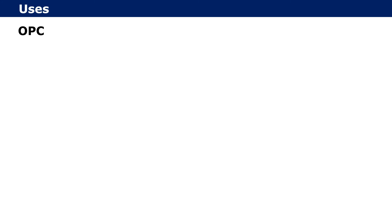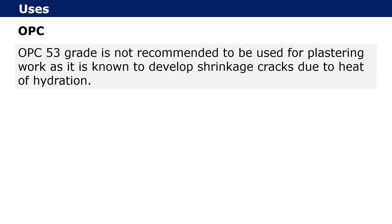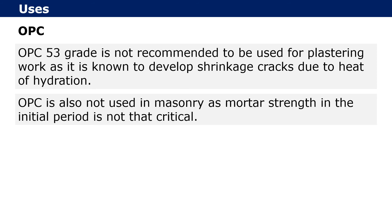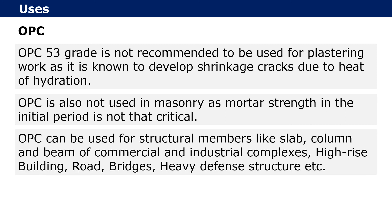OPC is the most commonly used cement in construction. OPC 53 grade is not recommended for plastering work as it is known to develop shrinkage cracks due to heat of hydration. OPC is also not used in masonry as high initial strength is not critical there. OPC can be used for structural members like slabs, columns, beams of commercial and industrial complexes, high-rise buildings, roads, bridges, and heavy defence structures.